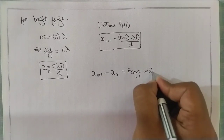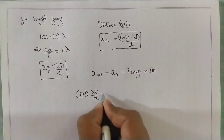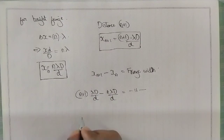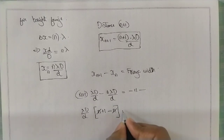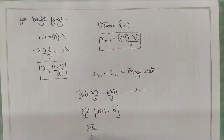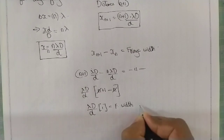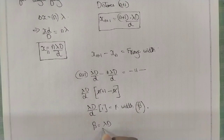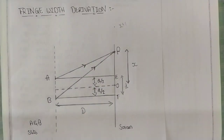The fringe width is X_{n+1} − X_n. Substituting: (n+1)λD/d − nλD/d. Taking out λD/d as common: the (n+1) − n gives 1. So the fringe width equals λD/d times 1. The fringe width is represented by beta, so beta = λD/d. This is the final expression for fringe width derivation. Thanks for watching. Please do subscribe and share among your friends. Thank you.